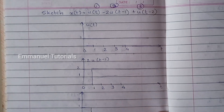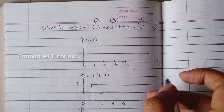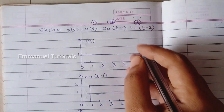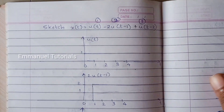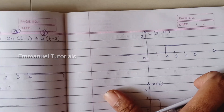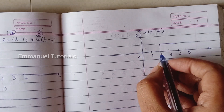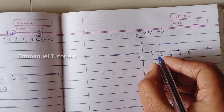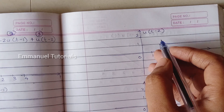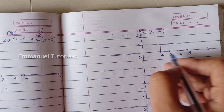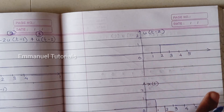Now for the third part, u(t-2) is going to be a shifted — that is, delayed — version of the unit step. So from t=2 to infinity, the amplitude is 1.